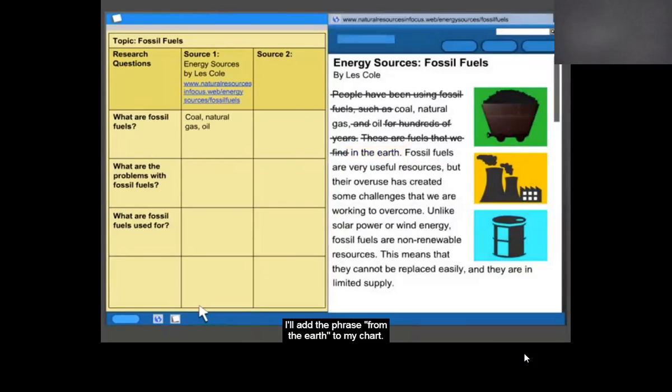I'll add the phrase, from the Earth, to my chart. I change the wording of the phrase, so that I put it in my own words. This is called paraphrasing.